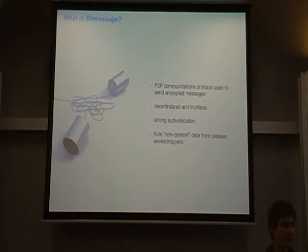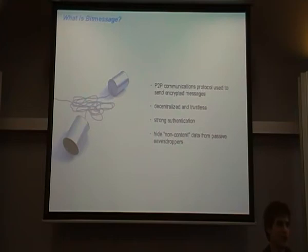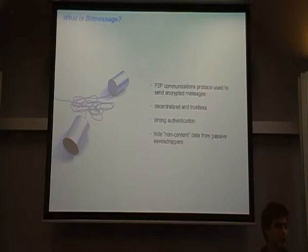So all this happens automatically - BitMessage as a client does that for you. It's trustless in the same way as Bitcoin is also trustless, because much of this code is based on Bitcoin's code. It uses strong authentication. It does use a long set of characters as an address to be able to authenticate, and that address is at the same time a hash for a public key. And it hides non-content data from passive eavesdroppers, so an eavesdropper cannot use the metadata of your message passing to find out from where it came and to where it goes.